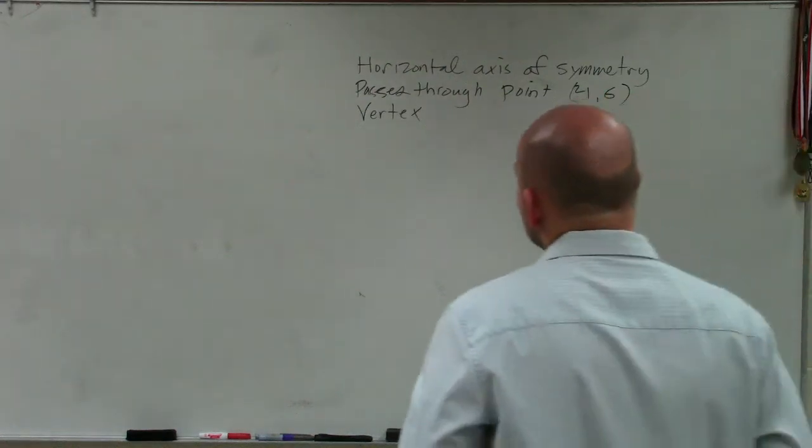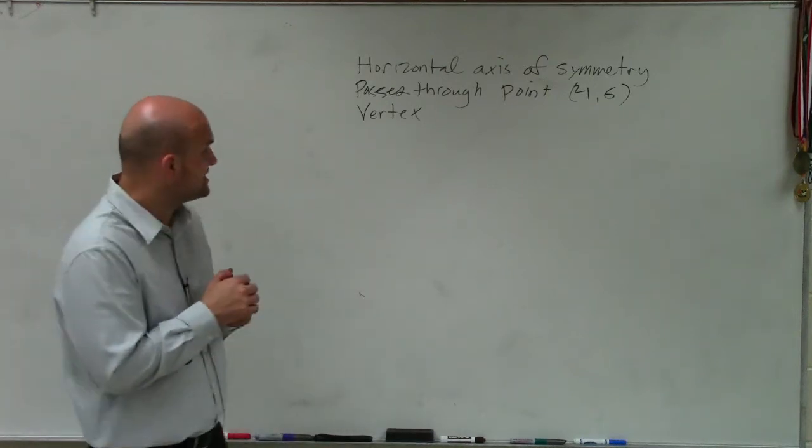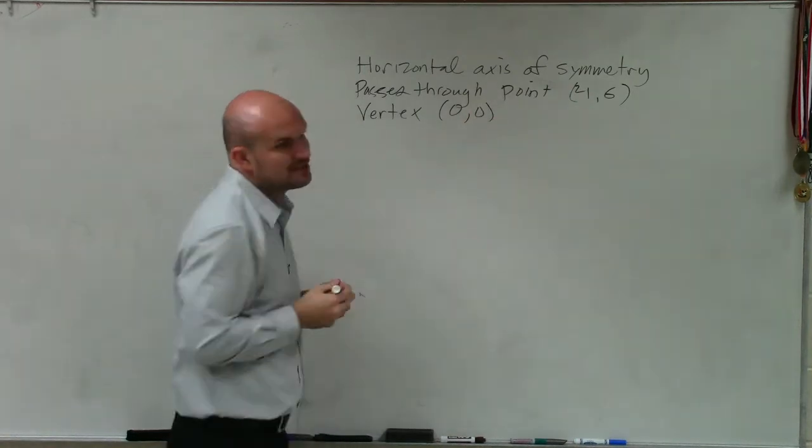All right. So on this one, we have a horizontal axis of symmetry passes through point (4,6), and it has a vertex at (0,0). Now, ladies and gentlemen, you're going to have a couple of these problems on your task.